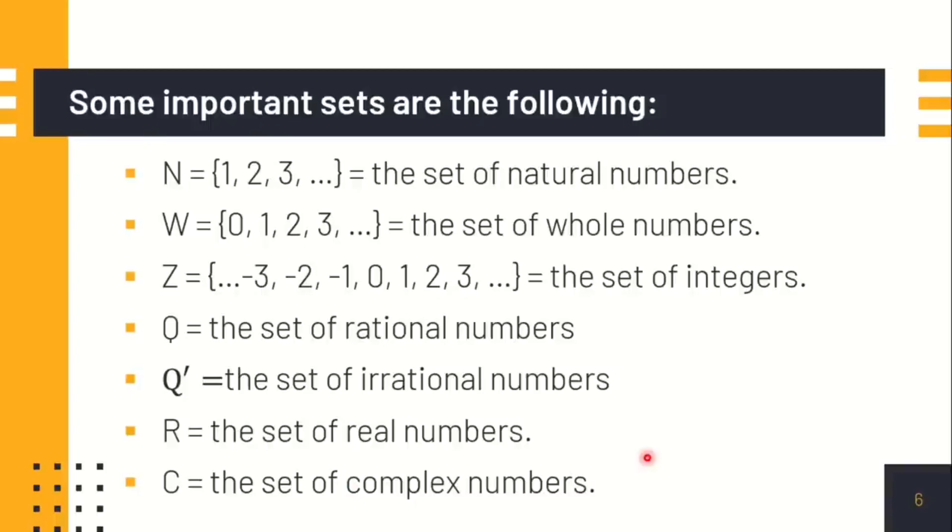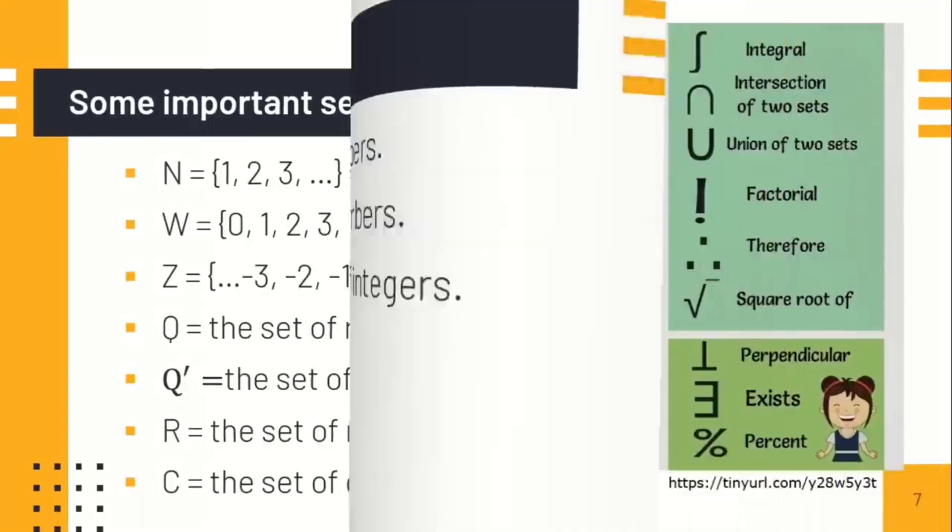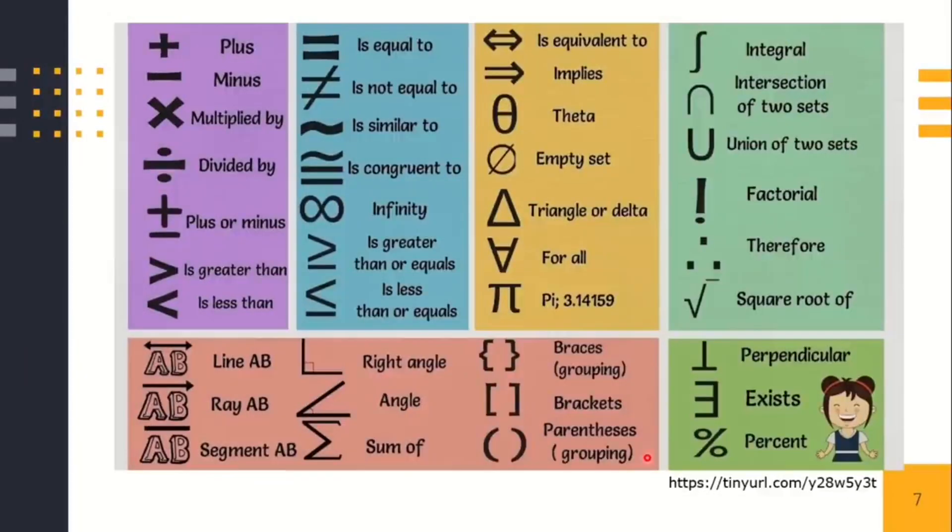And lastly, the capital C or the set of complex numbers. Usually, these are the negative radical or all the negative radical numbers. These are the common symbols that we will be using as we are going to translate mathematical sentences or language into symbols. You should be familiar with these symbols, because you will encounter them as we go along with this course.